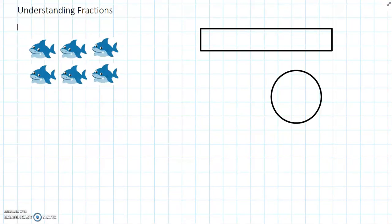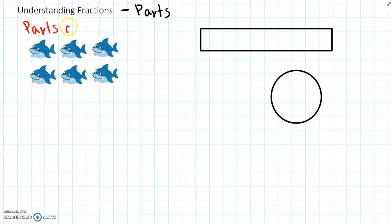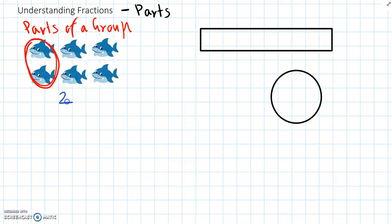Fractions are a way of showing parts of something, and the parts can be the number of things in a group, or parts of a whole. So fractions are all about parts. Firstly we can look at parts of a group. So we have a group of sharks here, and if we circle two out of this group of six sharks, we can show that as a fraction by saying two over six, or two-sixths. So that's parts of a group of objects.